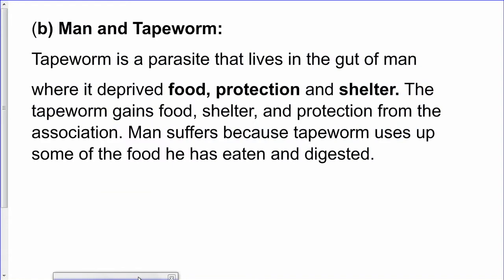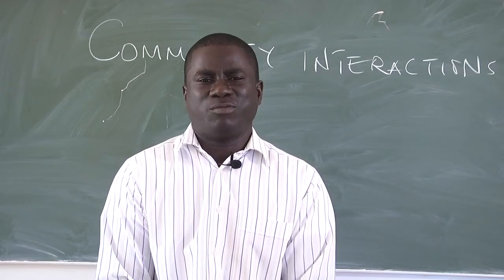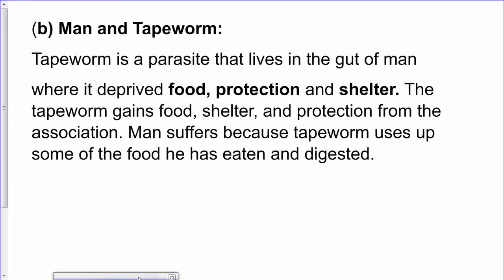We also have man and tapeworm. Human beings provide food, protection, and shelter for the tapeworm, while the tapeworm makes the human being suffer. Some people eat a lot but remain lean because most of the food they eat is absorbed by worms in their system. That is why it is very important to do deworming every three to six months, so that if worms are in your system they can be flushed out.